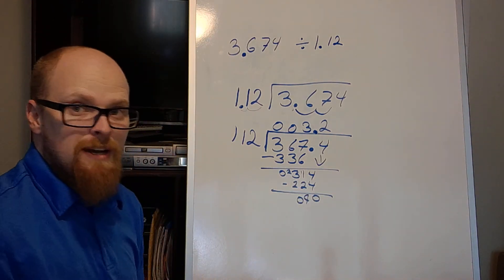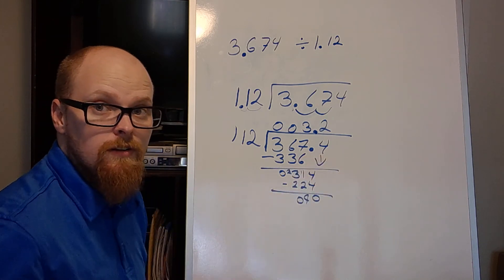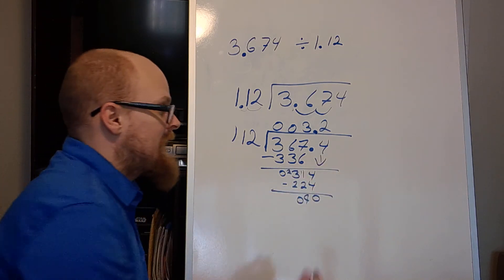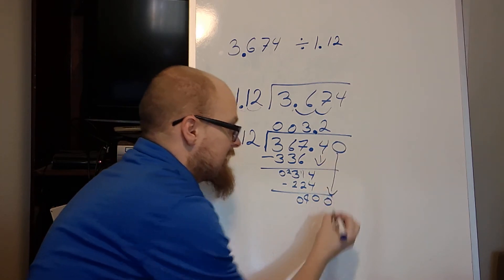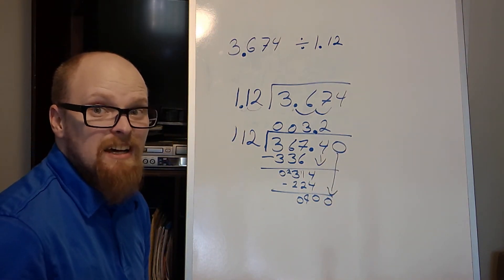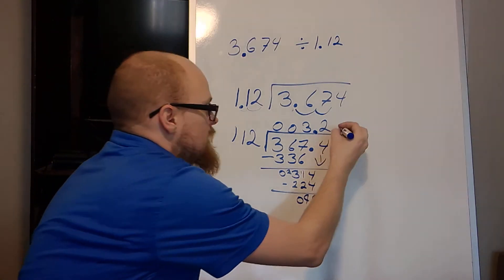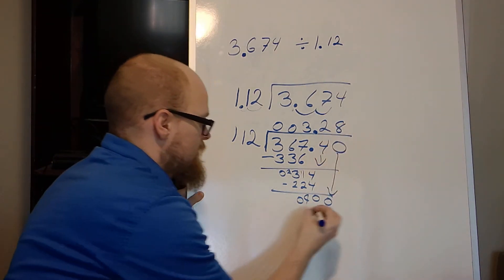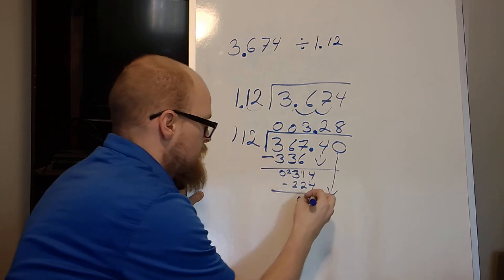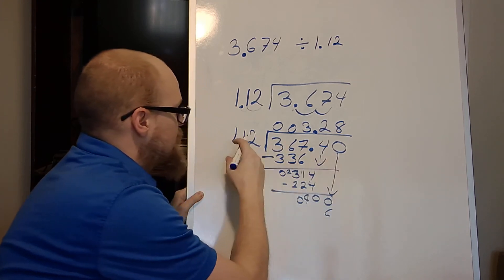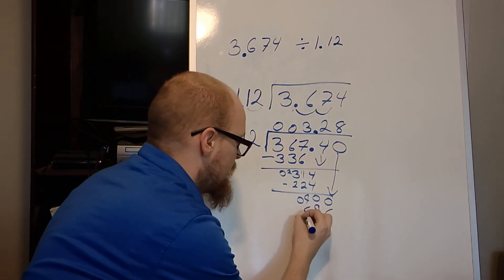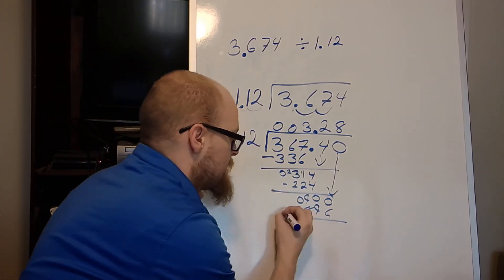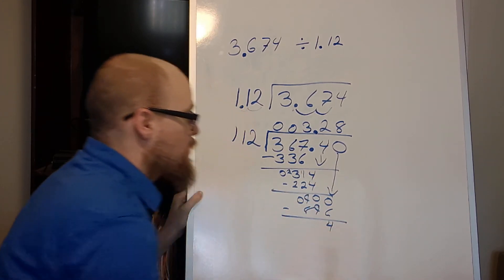So notice I'm not done, but I've ran out of numbers up here. You can always add a zero. Add a zero. Bring it down and continue this. Now I have to go into 900. Let's try an eight. Eight times eight is sixteen. I carry the one. Which means eight times what is eight plus the one is nine. And that will be an eight. I do my subtraction and I have a four left over.